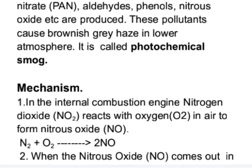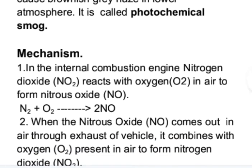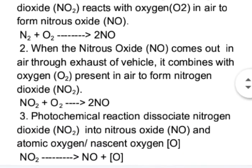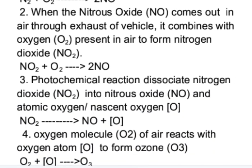Now let us see the stepwise mechanism of formation of photochemical smoke. In the internal combustion engine, nitrogen dioxide reacts with oxygen in air to form nitrous oxide. When nitrous oxide comes out in air through the exhaust of a vehicle, it combines with oxygen present in air to form nitrogen dioxide. Photochemical reaction — meaning a reaction induced by sunlight — dissociates nitrogen dioxide into nitrous oxide and atomic oxygen.